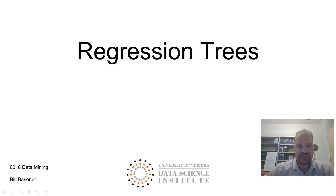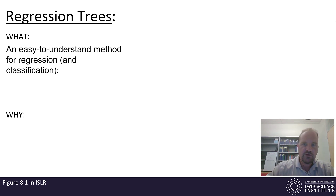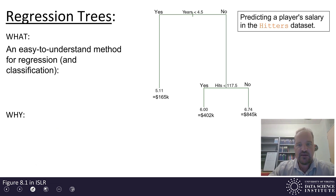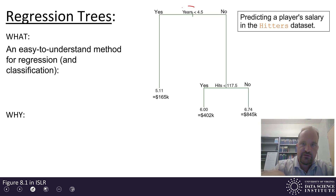Welcome to the lesson video for regression trees. In this video we're going to talk about regression trees, which are an easy to understand method for regression and, as we will see later, for classification. A regression tree is simply a set of thresholds or decisions that we follow, and at the end we are provided with a number which is the estimate for our observation. It's easiest to understand from a diagram, so let's walk through an example.